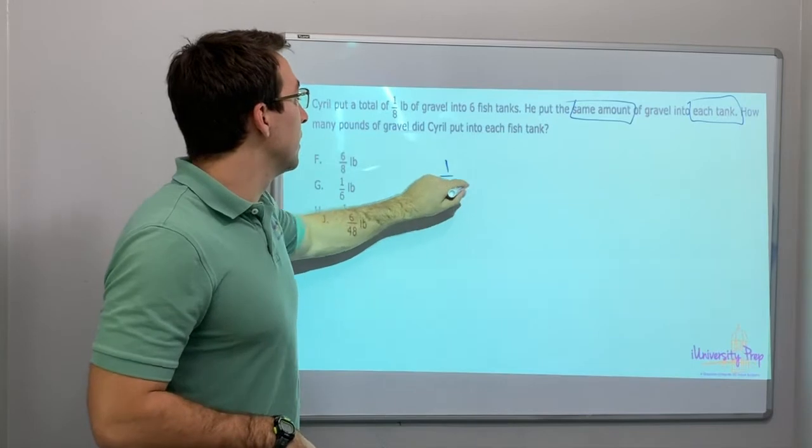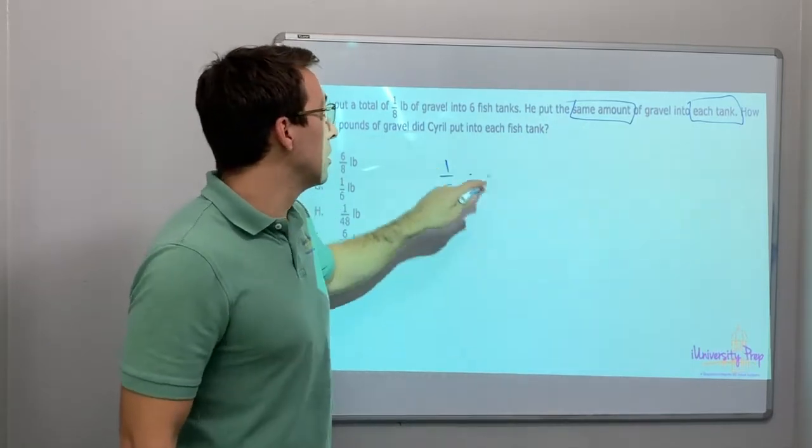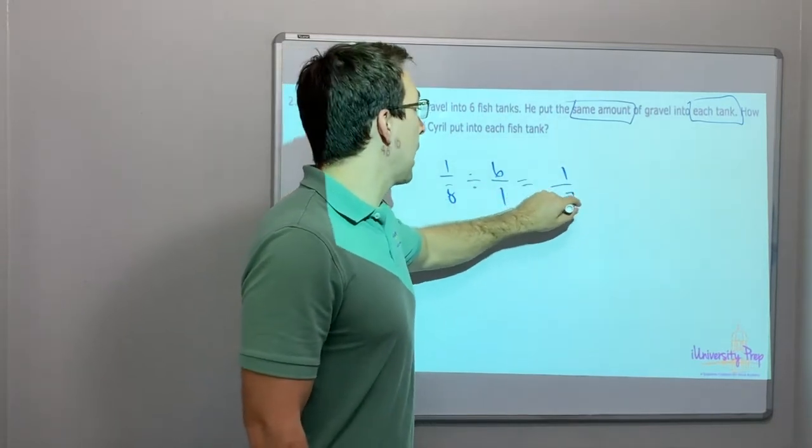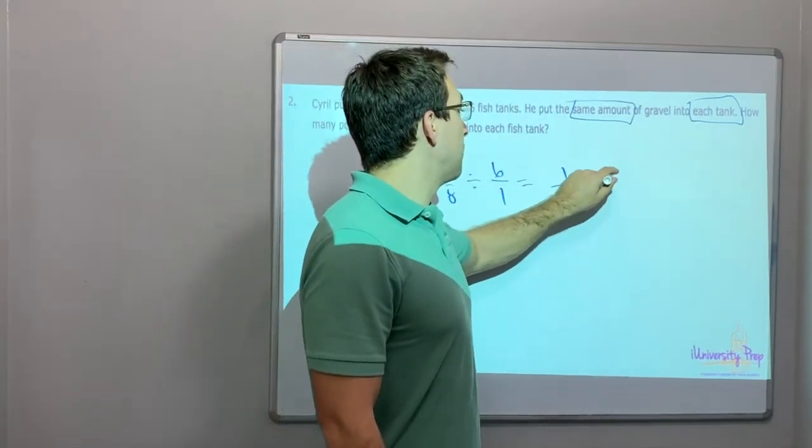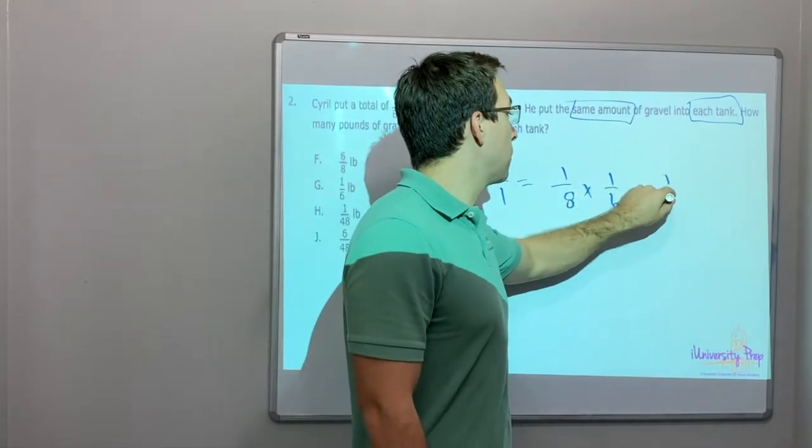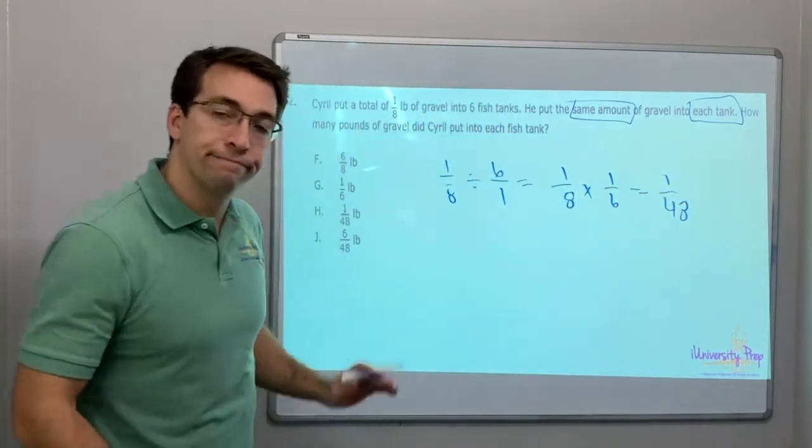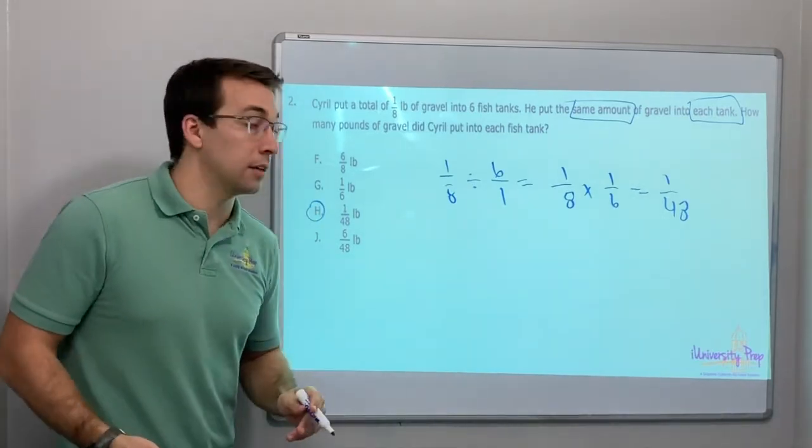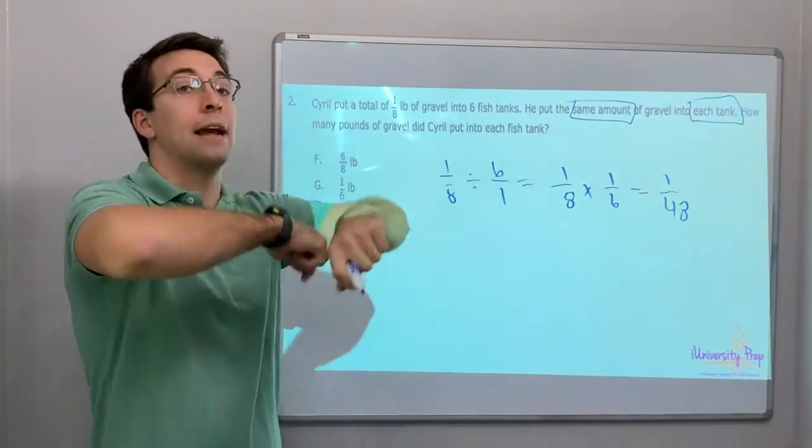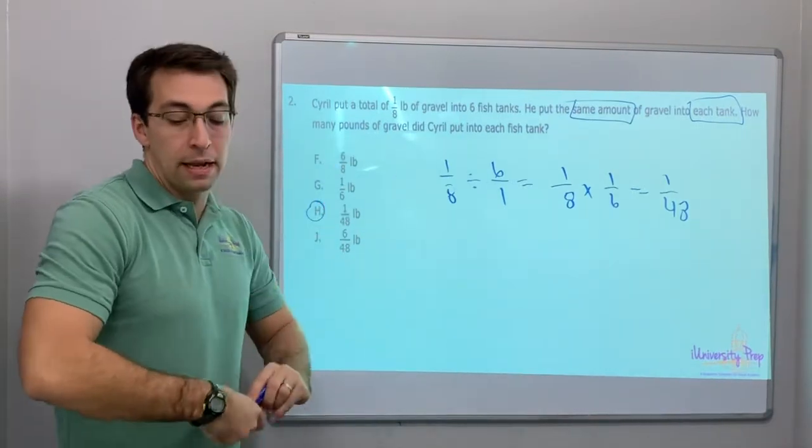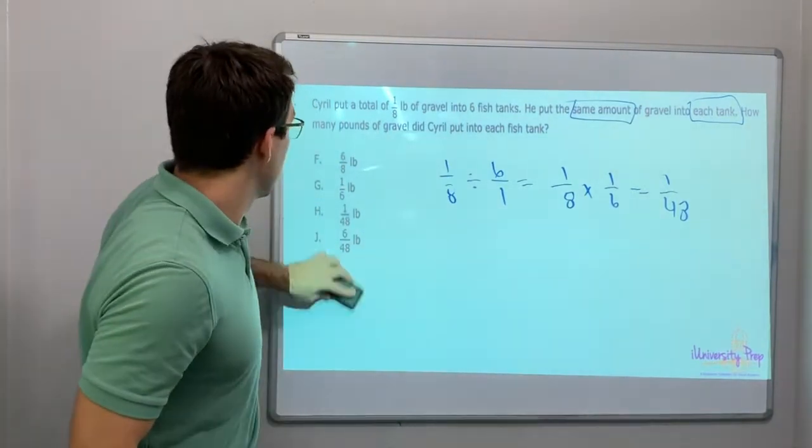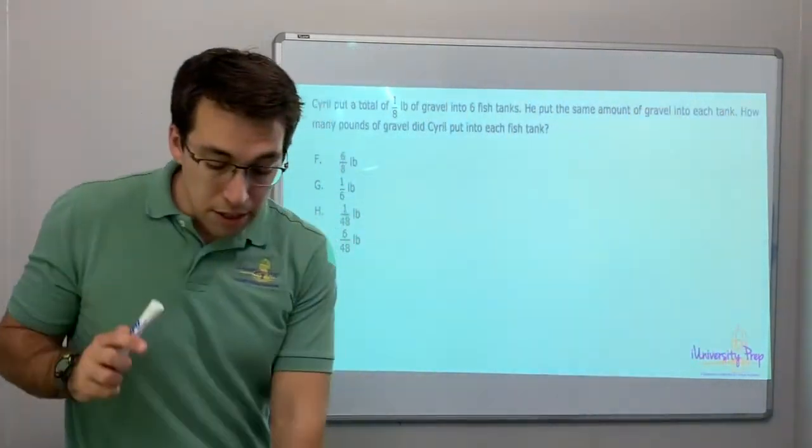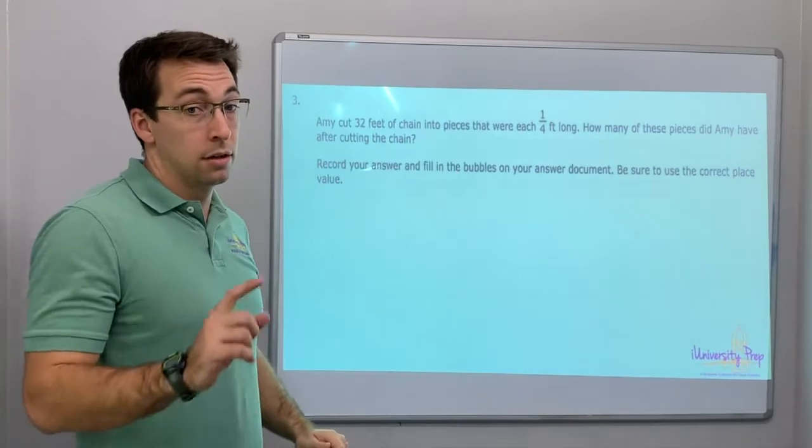One-eighth divided by, because of division, six over one equals one eighth multiplied by one over six equals one over 48. That simple. One forty-eighth pound into each fish tank. Multiply and flip. Multiply and flip.